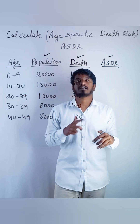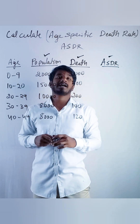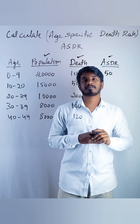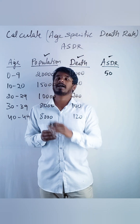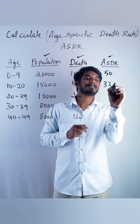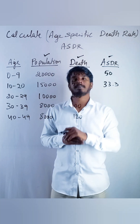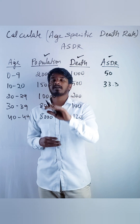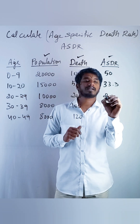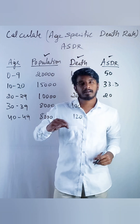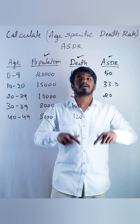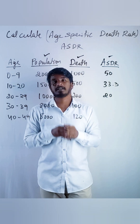Right, let us calculate. 1000 divided by 20,000 is 50. 500 divided by 15,000 into 1000 will be 33.3. 200 divided by 10,000 into 1000 will be 20. Like this we need to calculate for each age group. We will get ASDR.